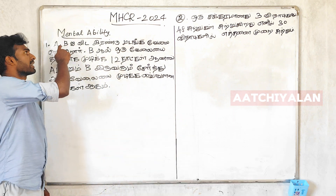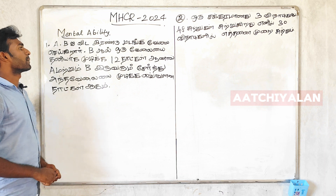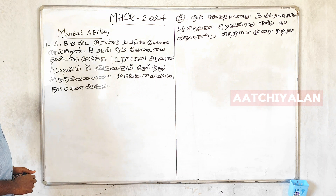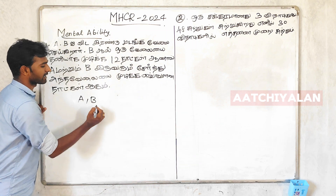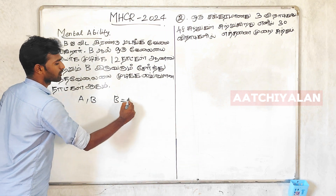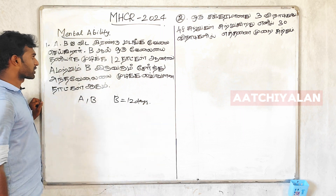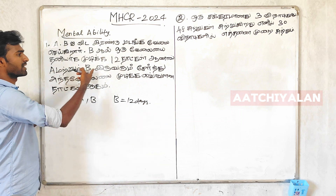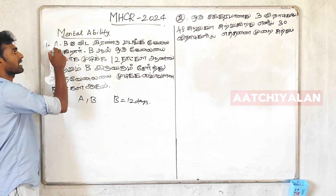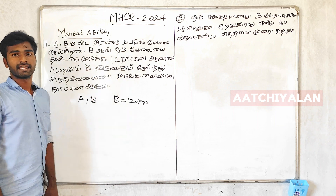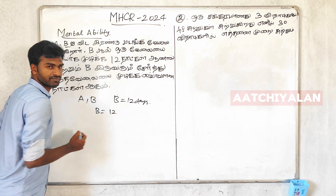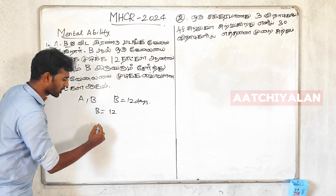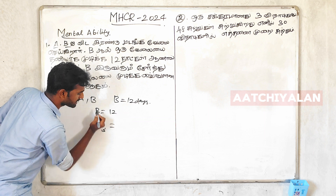First question: A and B are doing two jobs. A and B are doing two jobs. If you do 12 jobs, then B is 12. This is the capacity. What is it? 1 by B is equal to 1 by 12.